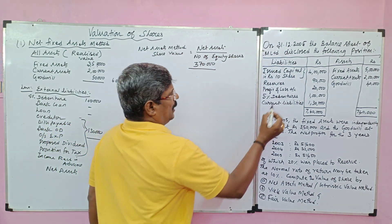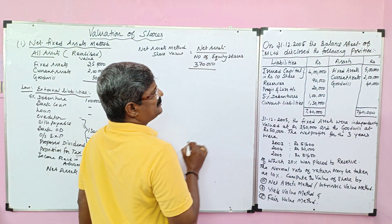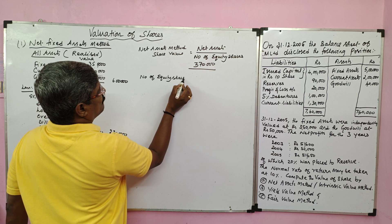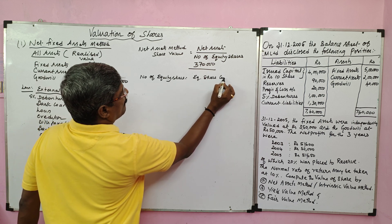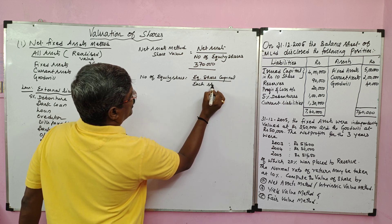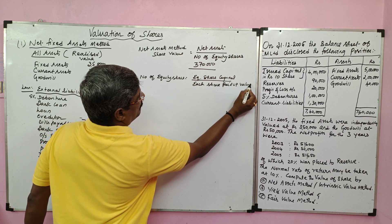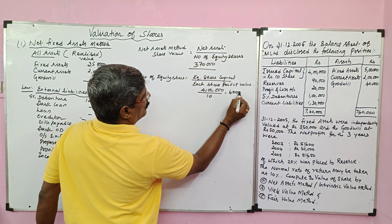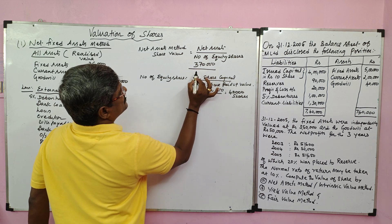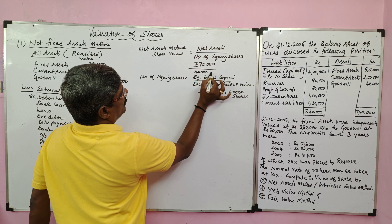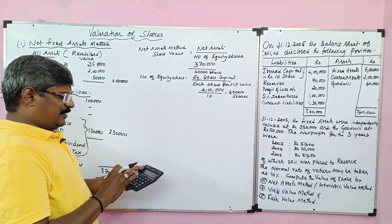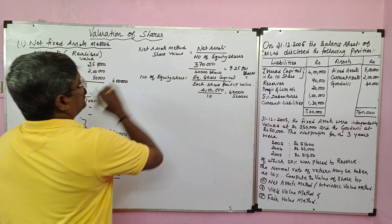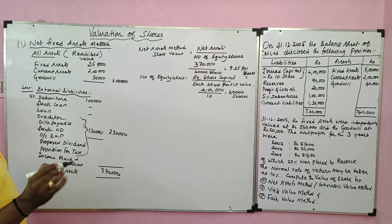Net assets = rupees 3 lakh 70,000. Number of equity shares = equity share capital divided by each share paid-up value = 4 lakh divided by 10 = 40,000 equity shares. So share value = 3 lakh 70,000 divided by 40,000 = rupees 9.25 per share. Under the net asset method, the share value is rupees 9.25.